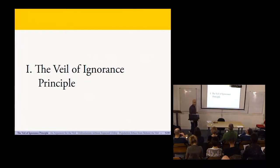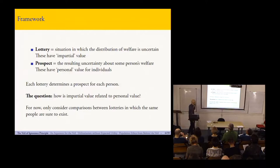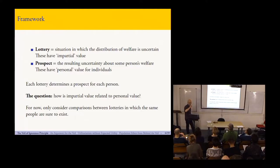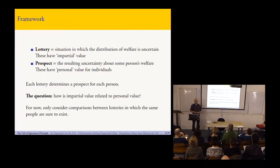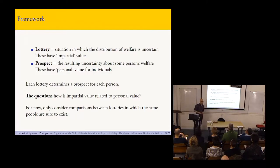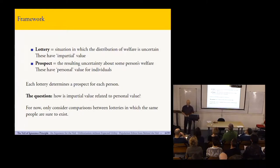Let me try to give my precise formulation, which I'll be in some sense defending. To set the stage, I'm going to be dealing with situations of uncertainty. I'm not just going to be talking about distributions of welfare — I'm going to be talking about what I'll call lotteries, which are situations in which the distribution of welfare is uncertain. These are some of the basic objects of evaluation. The value of the lottery I'm going to call its impartial value, or general value, aggregate value — some people call it impersonal value, though I shy away from that term. Or you might call it its moral value.